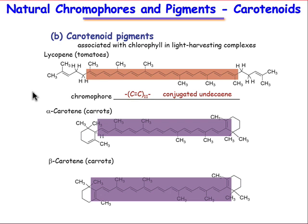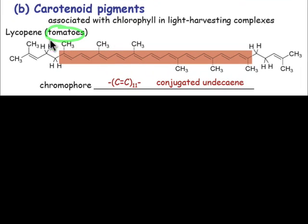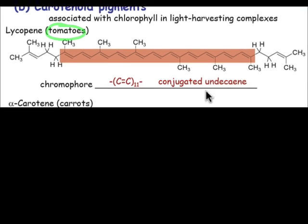The carotenoid pigments are shown here. These show up in the red color of tomatoes. You can see the very extended pi-delocalization — alternating double and single bonds. This is a conjugated undecaene.